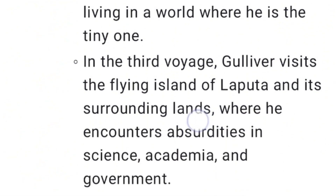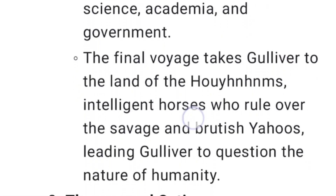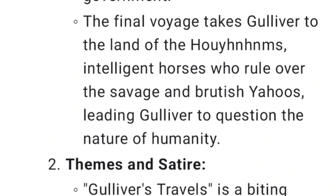In the third voyage, Gulliver visits the flying island of Laputa and its surrounding lands, where he encounters absurdities in science, academia, and government. The final voyage takes Gulliver to the land of the Houyhnhnms, intelligent horses who rule over the savage and brutish Yahoos, leading Gulliver to question the nature of humanity.